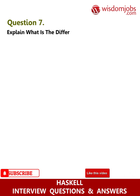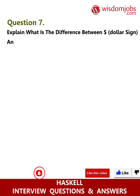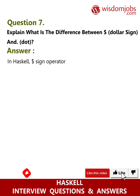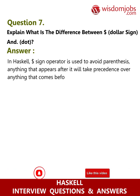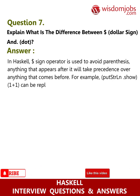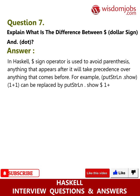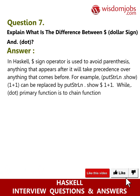Question 7: Explain what is the difference between the dollar sign ($) and dot (.) operators. Answer: In Haskell, the dollar sign operator is used to avoid parentheses — anything that appears after it will take precedence over anything that comes before. For example, `putStrLn (show (1 + 1))` can be replaced by `putStrLn $ show $ 1 + 1`.